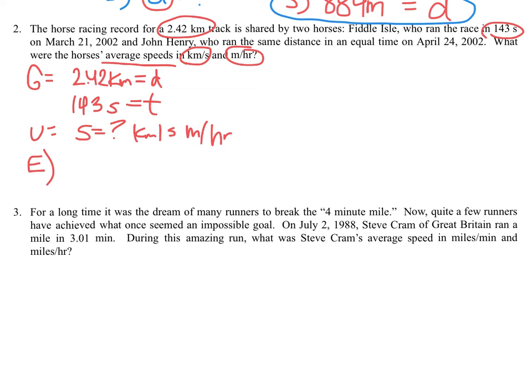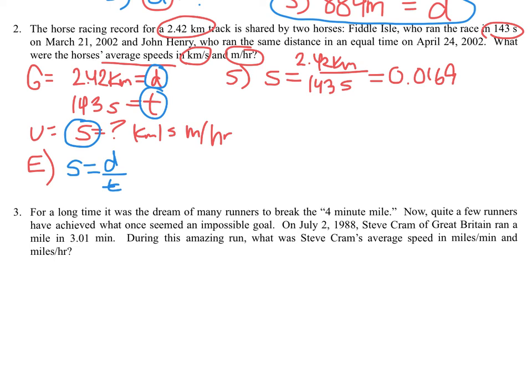For the GUESS method, E is next. Speed is what we're looking for, and distance and time we're given. Those variables all point to my equation: speed equals distance divided by time. Now that I have that, I can start my substitution process. Subbing in, S for speed I don't need because I don't have it yet—I'm going to solve for it. But my distance is 2.42 kilometers on top and 143 seconds on the bottom. If I divide 2.42 by 143, I end up getting about 0.0169. And that's going to be kilometers per second. Good news—I was supposed to find kilometers per second for one of my answers.